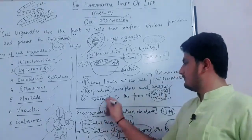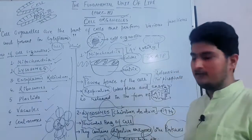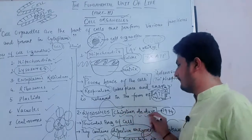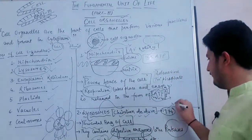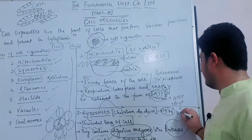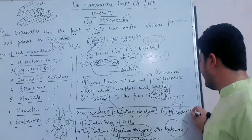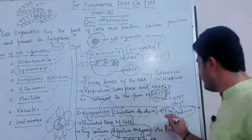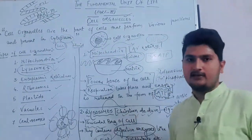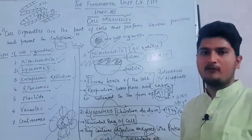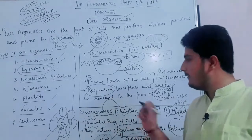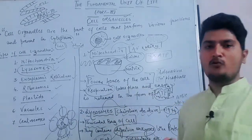The discovery of lysosomes was made by a Nobel Prize winner. His name was Christian de Duve. Christian de Duve was awarded the Nobel Prize in the field of medicine in 1974. This renowned personality discovered lysosomes. Lysosomes are the suicidal bag of the cell — they destroy the cell itself.